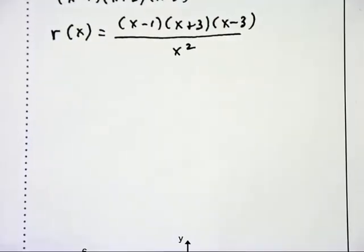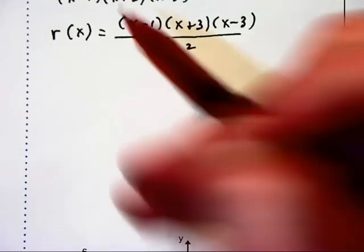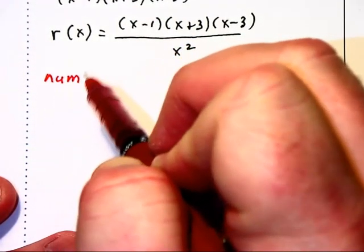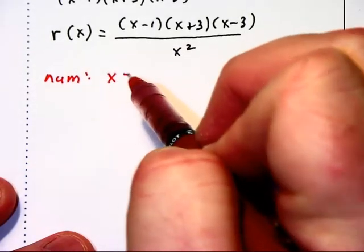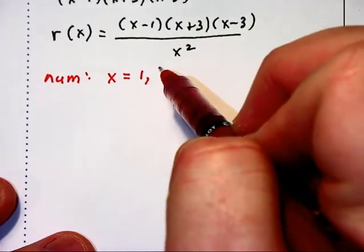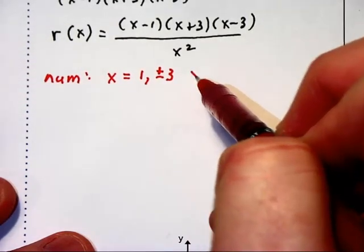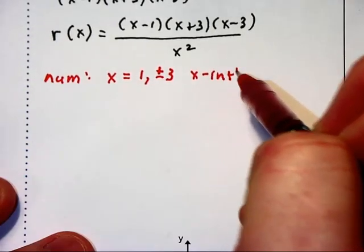Now let's do some analysis on this function right here. Looking at the numerator, we find out that x equals 1, and plus and minus 3 will give us the x-intercepts.